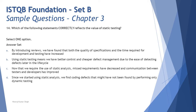Option A says: by introducing reviews, we found that both the quality of the specification and the time required for development and testing have increased. If you follow the statement smoothly, one word changes the entire meaning. Early testing saves time and money is one of our principles — static testing and conducting reviews earlier in the life cycle saves your time and money, so the time required would reduce, not increase. That last word 'increased' should be 'decreased,' so option A is incorrect.